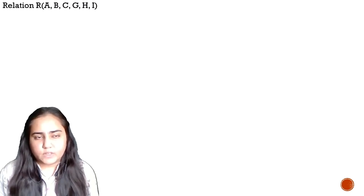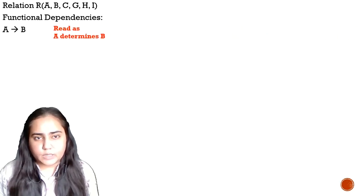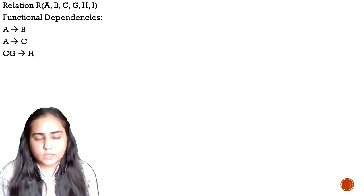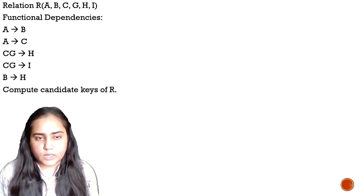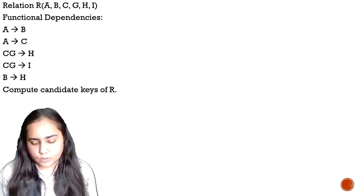So if you are given a relation R with attributes A, B, C, G, H and I, and the functional dependencies: A determines B, A determines C, C G determines H, C G determines I, and B determines H — and you are told to compute all the candidate keys of R, then this is how you will do it.